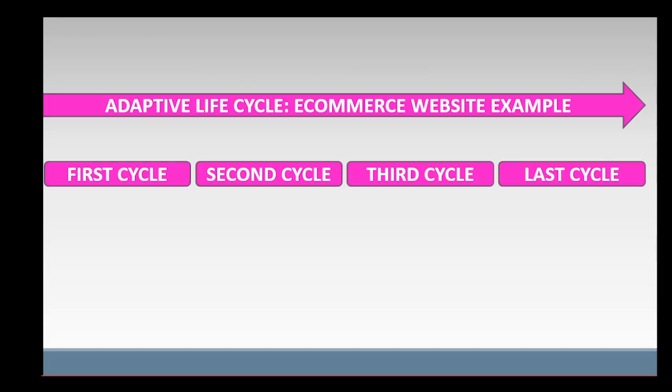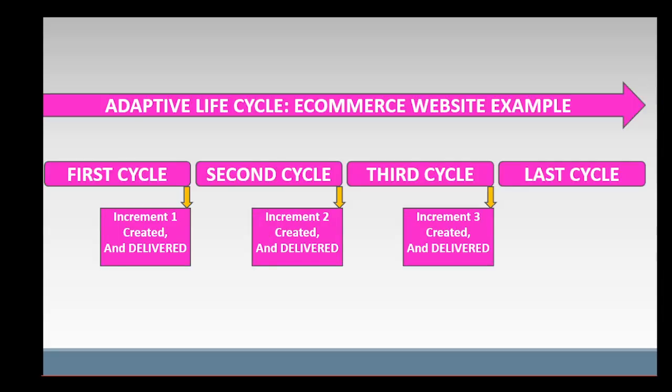For example, the e-commerce website development is divided into four cycles. In each cycle, the following e-commerce increments, increment 1, increment 2, increment 3, and increment 4 are successively created and could be delivered. If the client is satisfied with increment 4, created in the last cycle, the project ends.